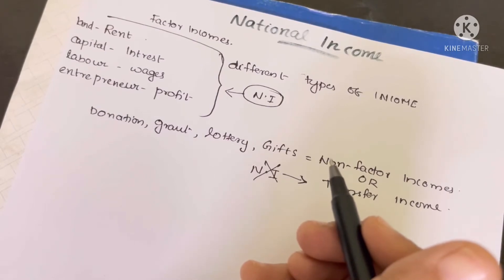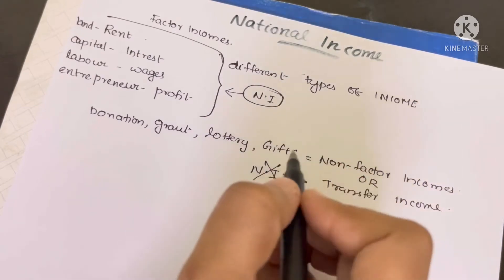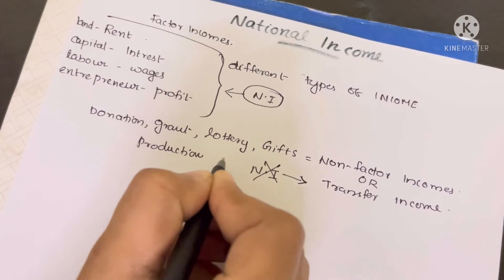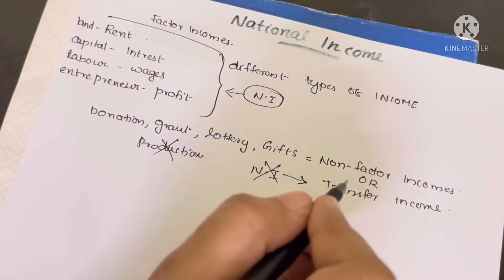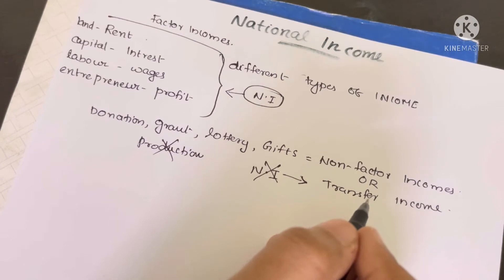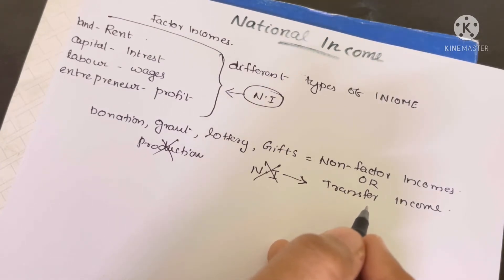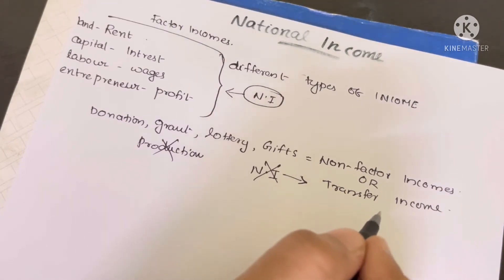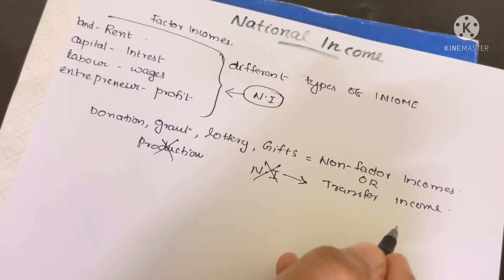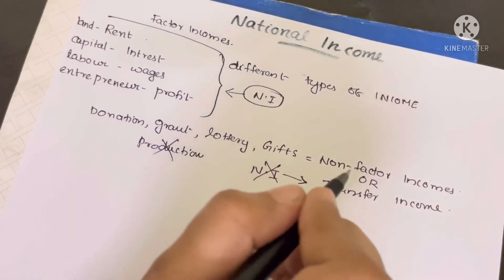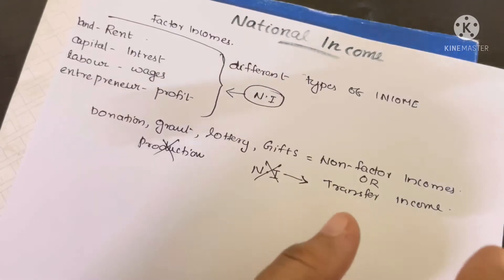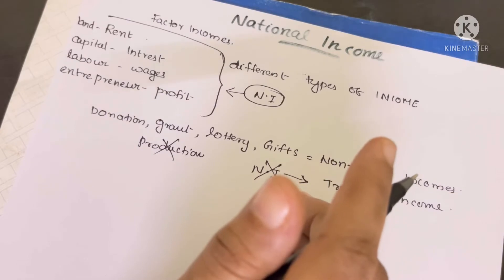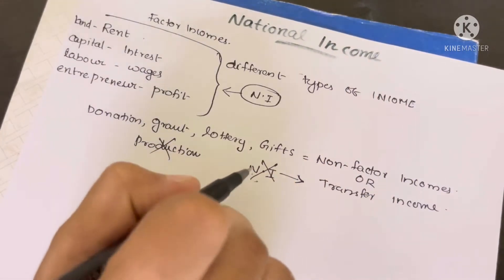No production activities are involved in getting these incomes. In non-factor income, there is no production activity whatsoever. Therefore, transfer income and non-factor income are not included in the national income.